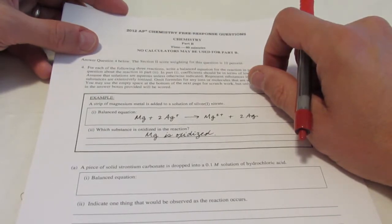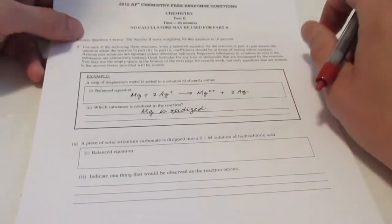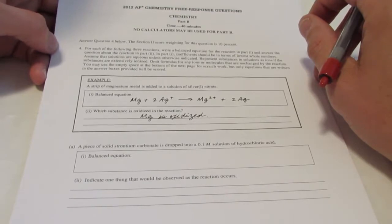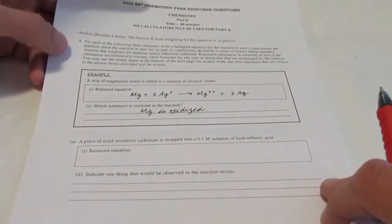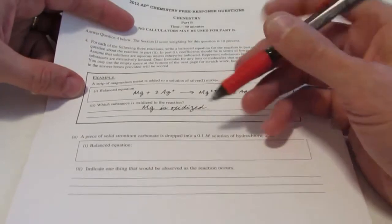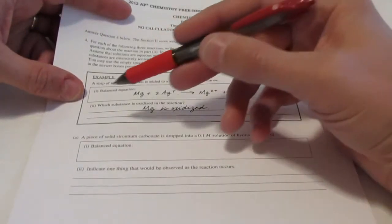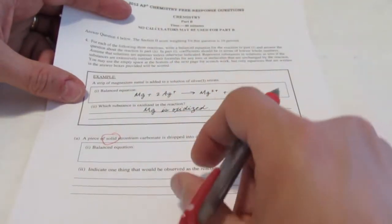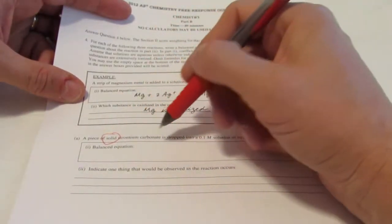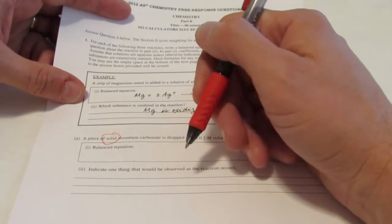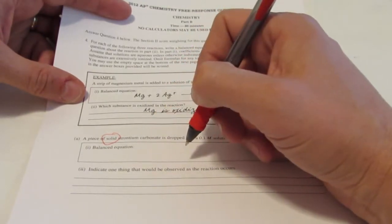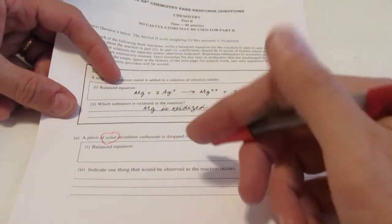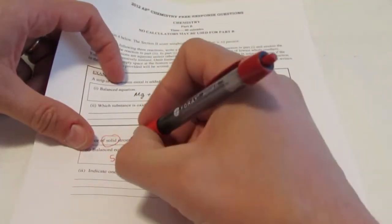You need to write and balance the net ionic equation for these three reactions. The equation itself, written and balanced properly, is worth four points, and then you pick up one point for answering a question related to that equation. So, question A, we have a piece of solid strontium carbonate.